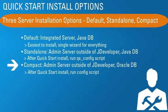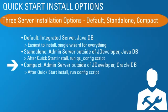The compact option is also a single admin server, but the big difference is that it uses an Oracle database. After the Quick Start install, you run the config script called config.command.